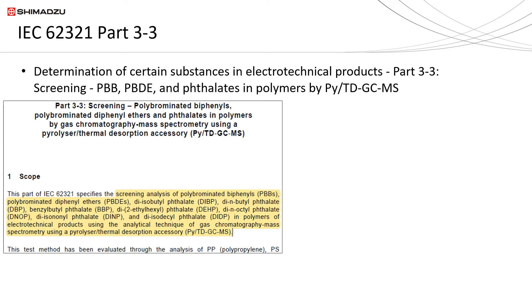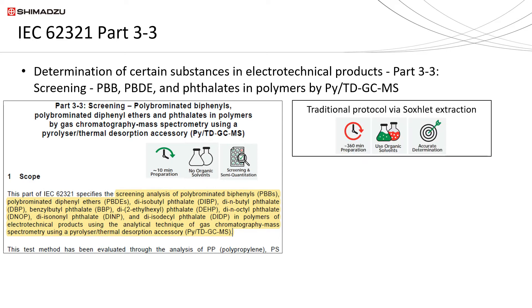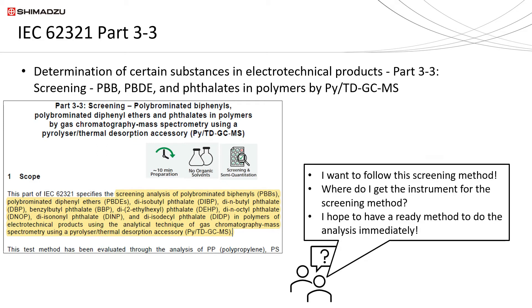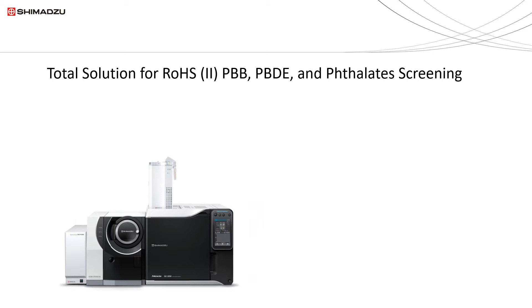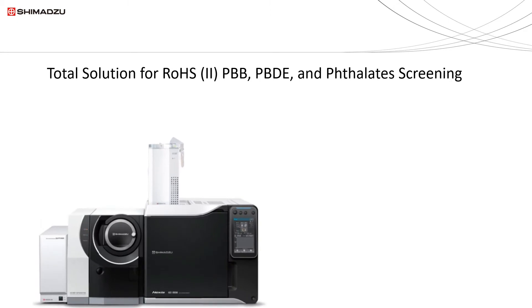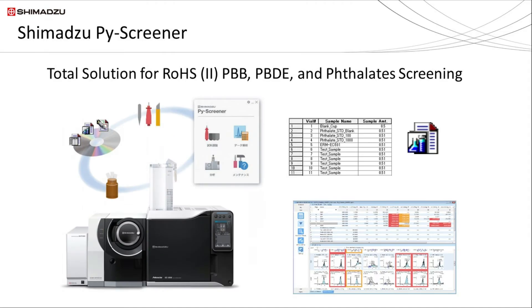IEC 62321 Part 33 provides workflow and analytical conditions to screen for these three groups of substances in polymer material. As this is a screening method, the total time spent from sample preparation is way shorter compared to traditional methods, which require long sample pre-treatment protocols and large amounts of organic solvent. For users that want to follow IEC 62321 Part 33 and do not have experience or want a ready method, don't worry — Shimadzu has everything covered. Shimadzu can provide a full package ranging from instruments to ready methods for the sample analysis of polybrominated biphenyls, polybrominated diphenyl ethers, and phthalate esters in polymers.